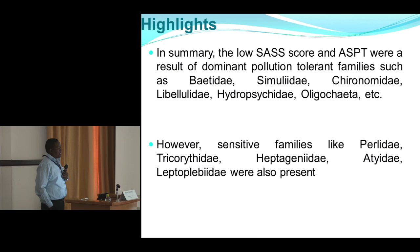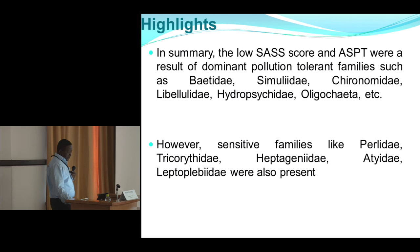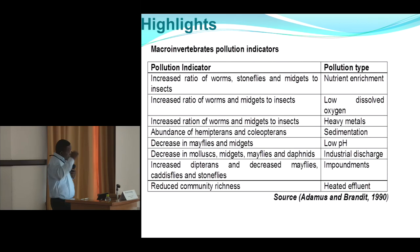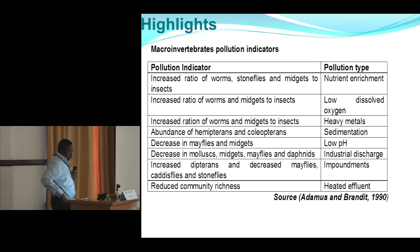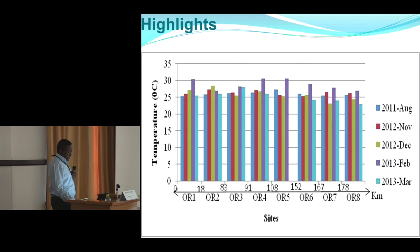To summarize: low SAS scores and ASPT indicate dominant pollution-tolerant families, meaning the river has been polluted — only organisms that can tolerate that level of pollution survive. In some areas, sensitive families are still present because those sites were not heavily polluted. Regarding macroinvertebrate pollution indicators, an increased ratio of worms, stoneflies, and midges to insects indicates nutrient enrichment, while reduced community richness indicates heated effluent pollution.